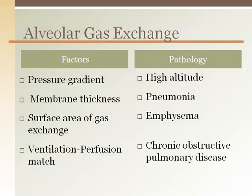The main modifiable factors that affect alveolar gas exchange for both oxygen and carbon dioxide are the pressure gradients, alveolar membrane thickness, the surface area for gas exchange to take place, and the matching of ventilation and perfusion. The associated pathologies that reduce blood oxygenation illustrating the role of each of these factors are shown: high altitude can reduce the pressure gradient; pneumonia can increase the alveolar membrane thickness; emphysema can reduce the alveolar surface area by creating large spaces; and ventilation-perfusion matching is affected by COPD, where constricted airways prevent gas exchange to those alveoli.